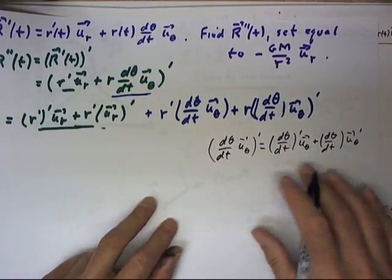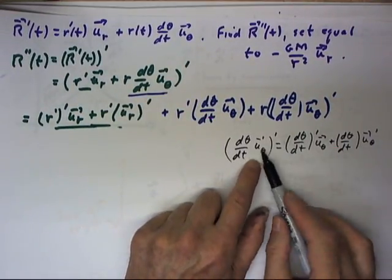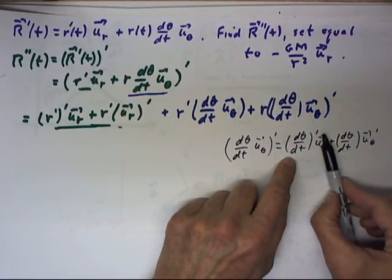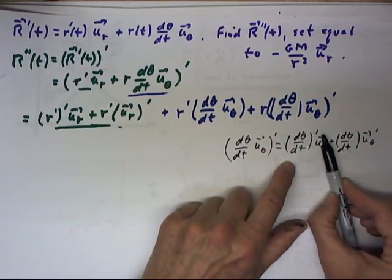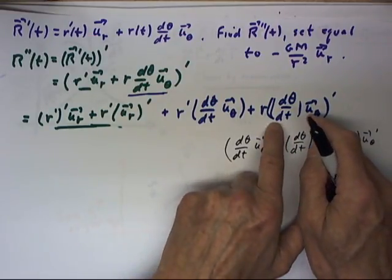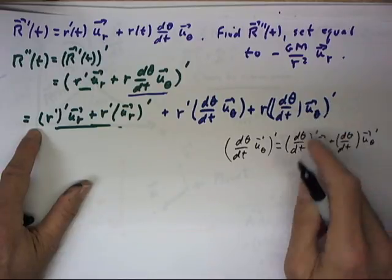Now we're going to be able to write out these derivatives because we know the derivative of u sub theta, and the derivative of d theta dt with respect to t is just the second derivative of theta with respect to t. So let's write that out and back substitute it here and see what we have.